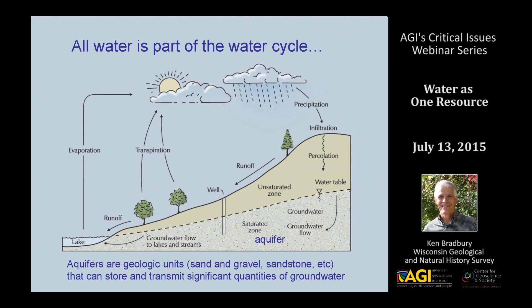We need to talk about the water cycle. All water begins as precipitation — snow or rain falling on the land surface, percolating or infiltrating into the ground. Much of that water becomes runoff, and much evapotranspires back to the atmosphere. A smaller percentage percolates into the ground and eventually crosses the water table, becoming part of the groundwater flow system. Groundwater moves through aquifers, which are geologic units permeable enough to transport, transmit, and store significant quantities of groundwater.